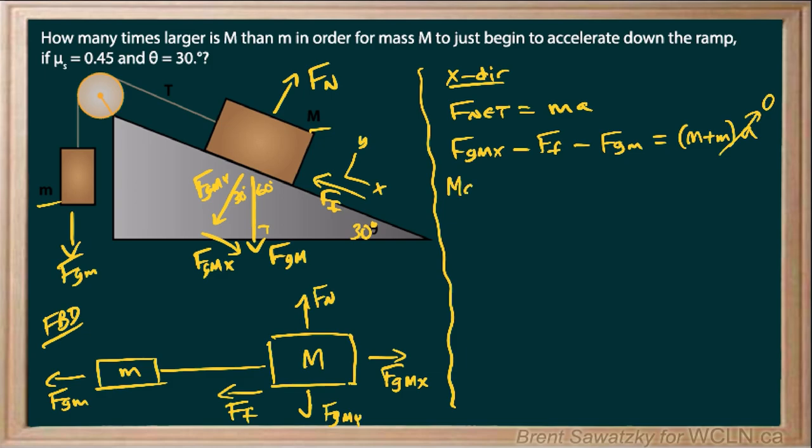We can say that our first term is capital M G. And then for the X component of it, we can put sine 30. And then the force of friction. Let's keep little steps. So for now, we'll just say mu F N. And then our F G M. And that's the little one. So it's just M G. And that's all equal to zero. All right.